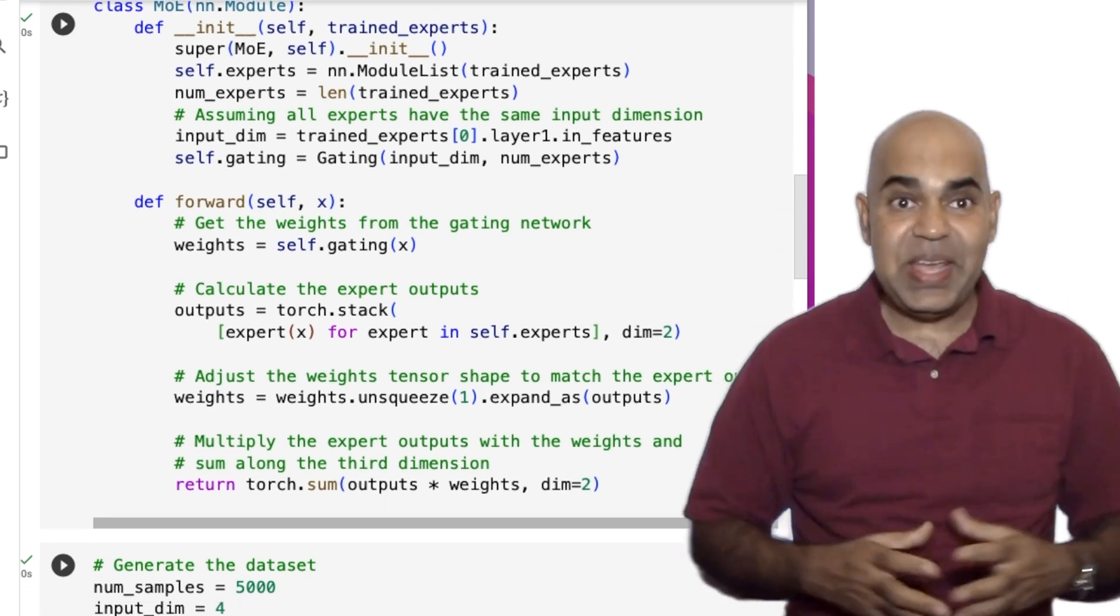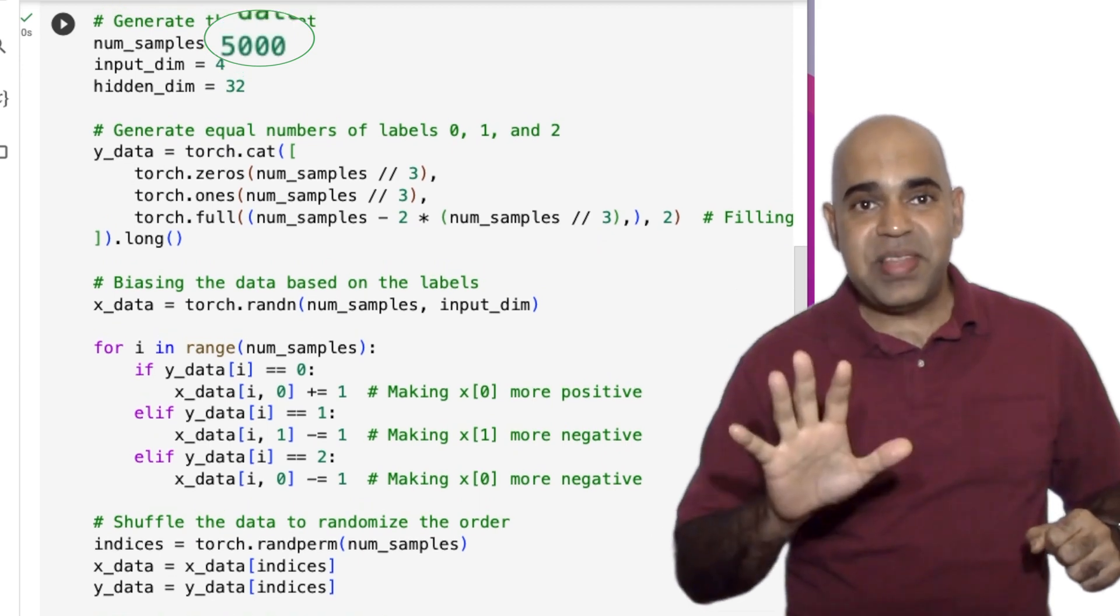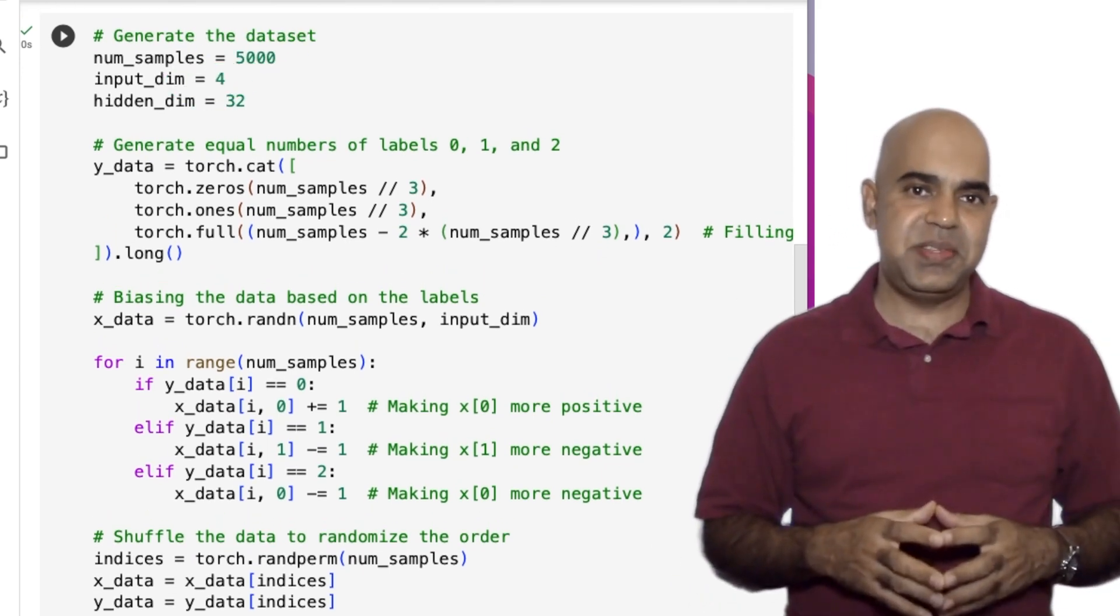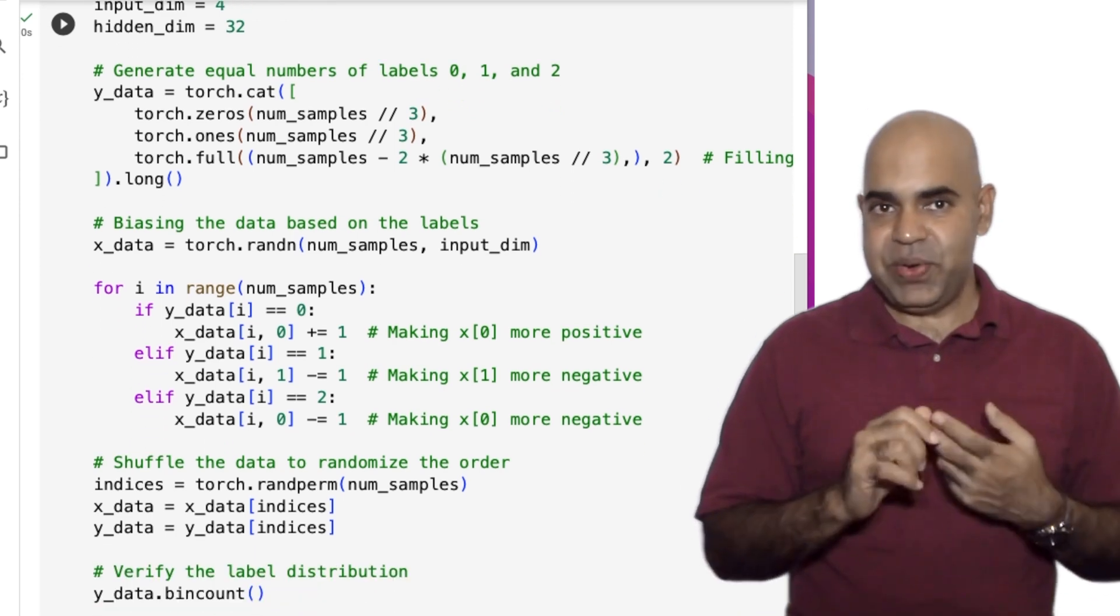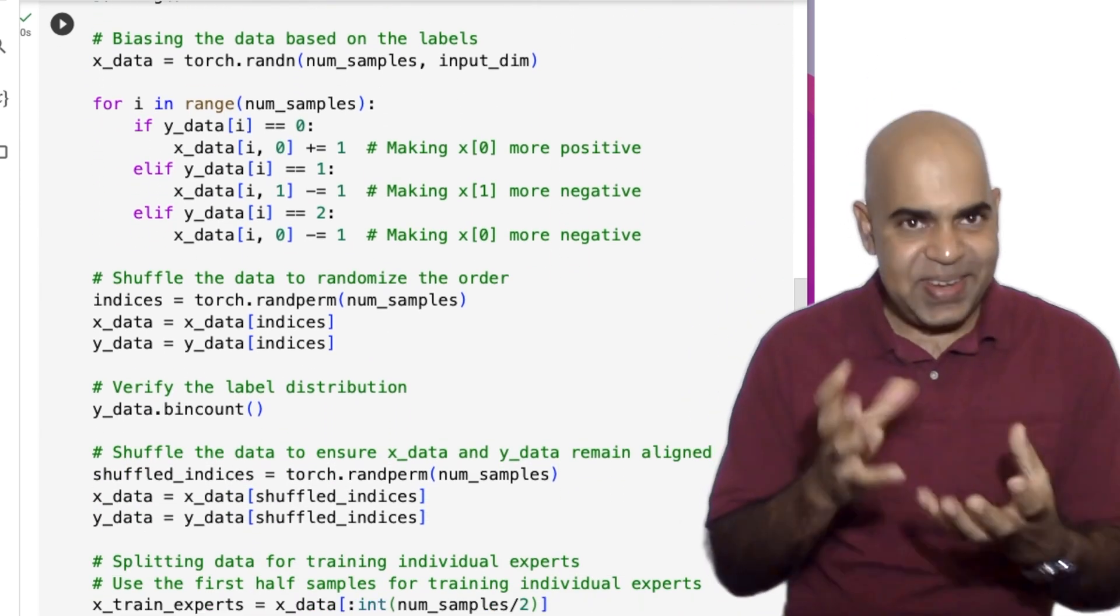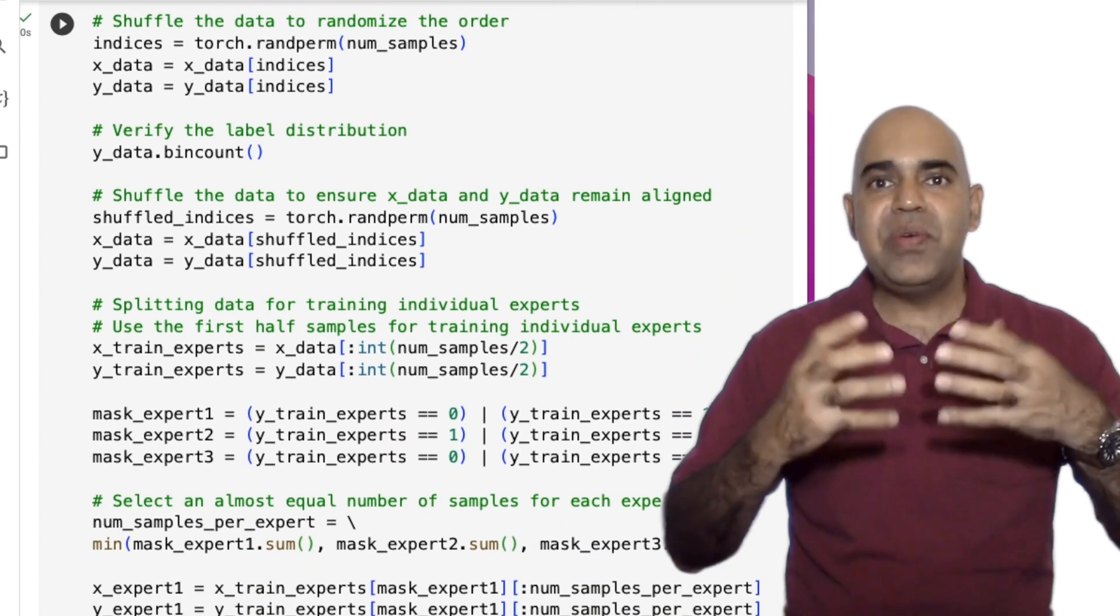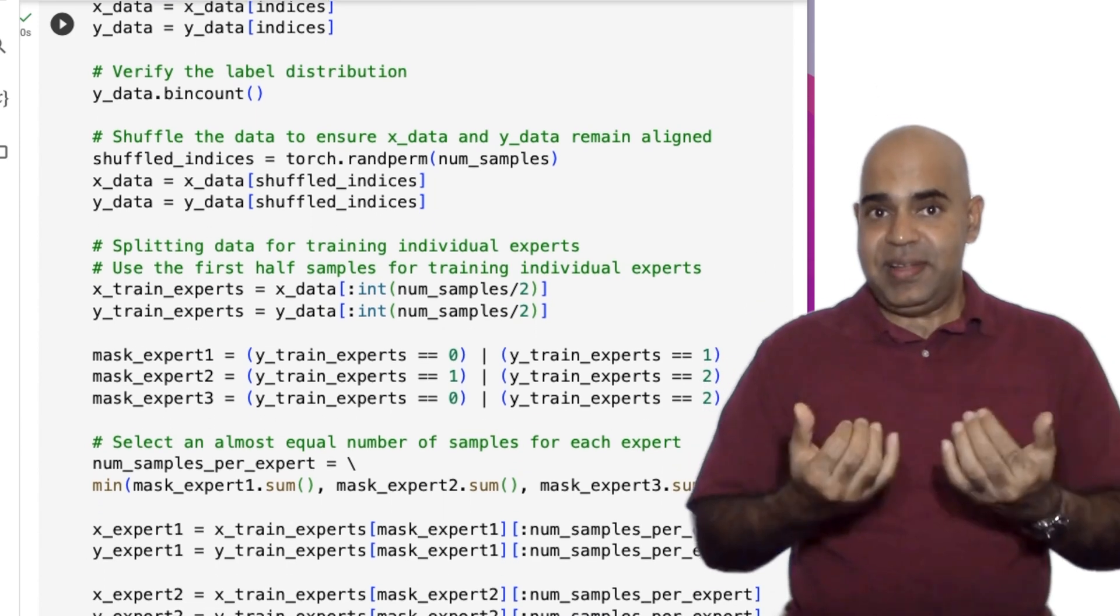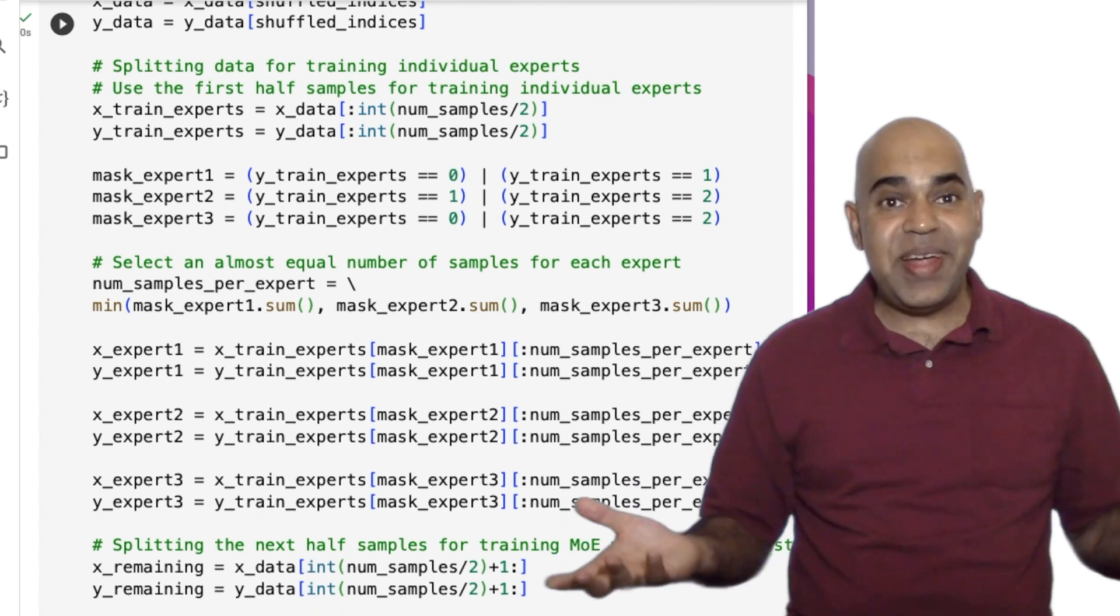Let us create a synthetic dataset of 5000 samples and four features. We are making sure that there are three class levels: level 0, level 1, and level 2. Overall, we make sure to create data chunks for three experts in such a way that they see more of two levels and less of the other level. That way, we make sure that their expertise varies.